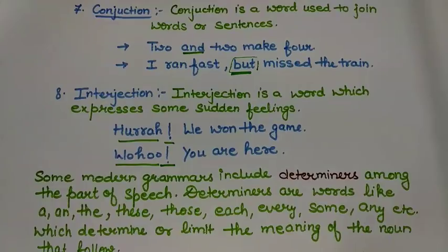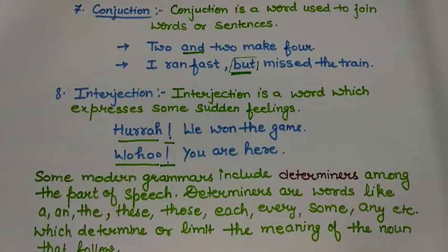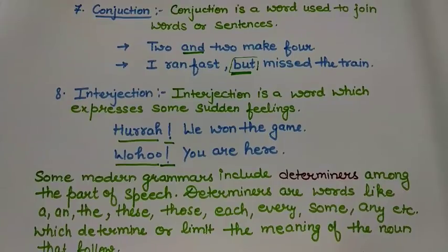Some modern grammars also include determiners among the parts of speech. Determiners are words like a, an, the, these, those, each, every, some, any, etc. These are words which determine or limit the meaning of the noun that follows.